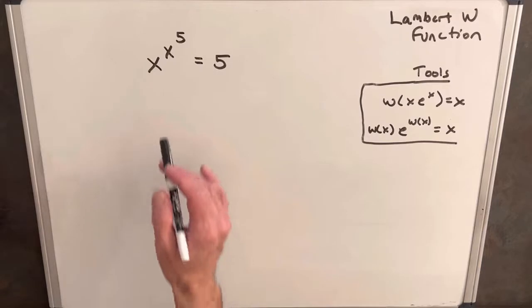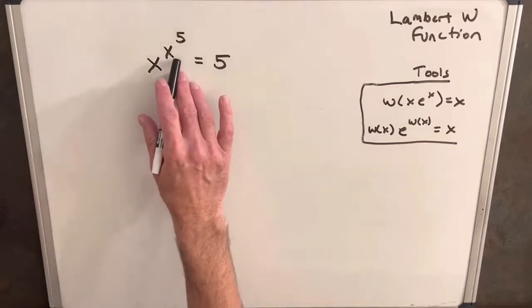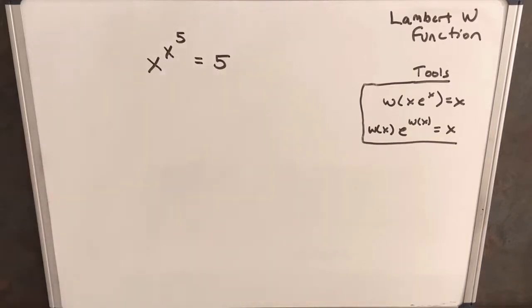So to start with we have a problem on the board: x to the x to the fifth equals five. This is a problem that I've done before without the Lambert W function and what I'll do is just go through that really quick, how we did that with just algebra.